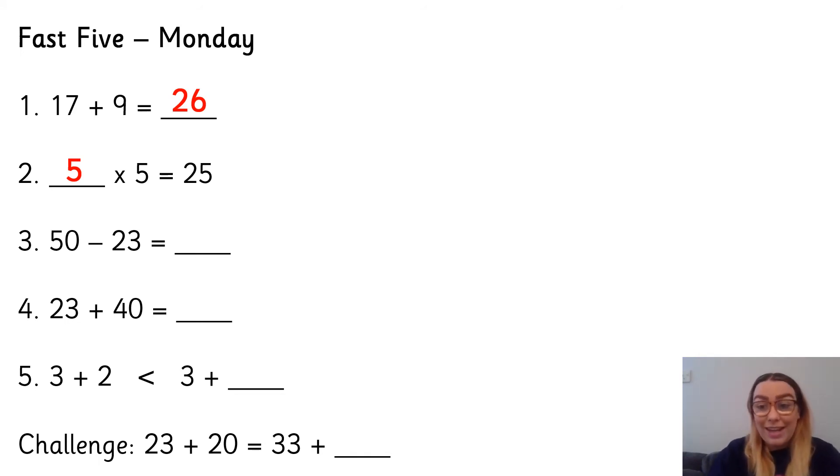Number three, 50 subtract 23. Now, you might know that double 25 is 50, so you might use that to help you. Or you might do something like, I'm going to take the 1s away. So 50 subtract the 3 1s is 47. And then I'm going to take the 10s away, which is 47 subtract 20, which is 27.